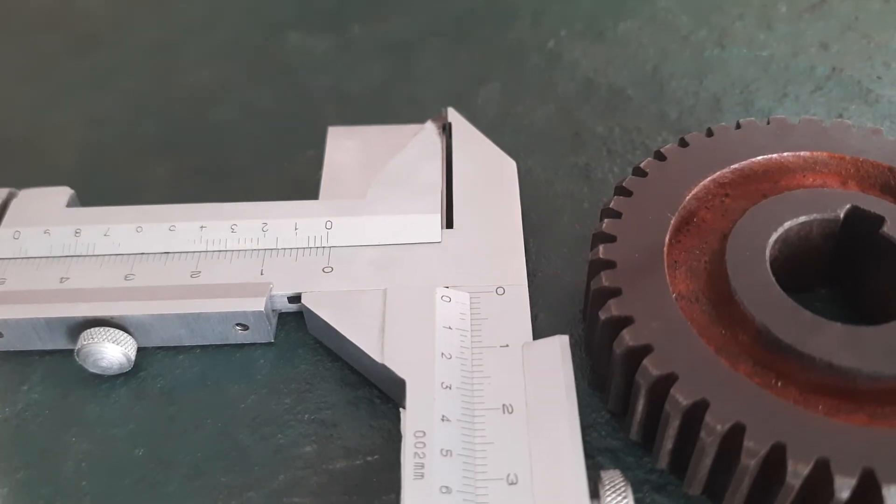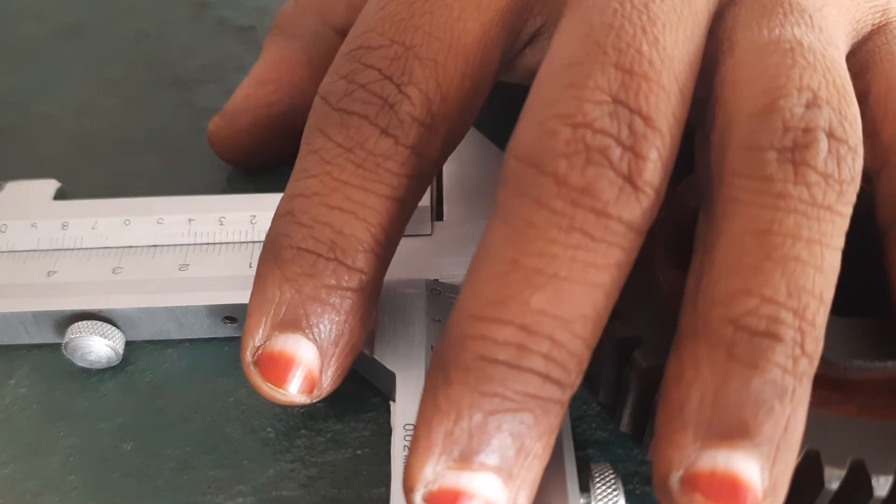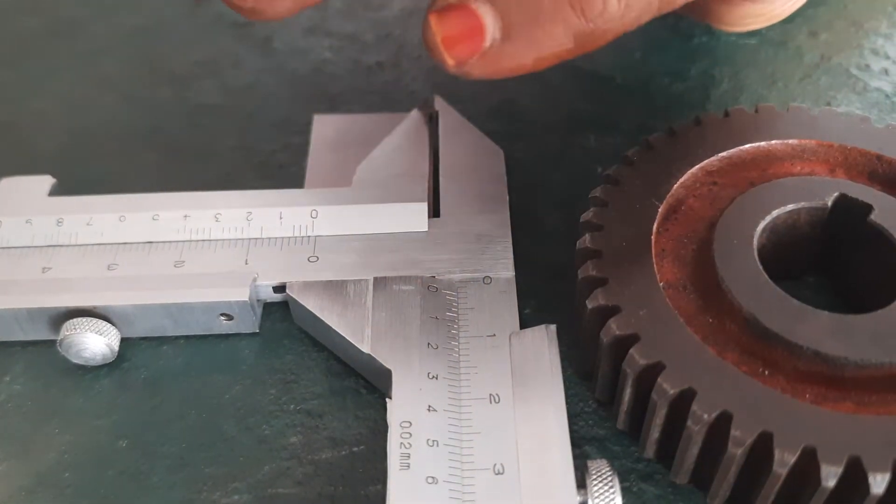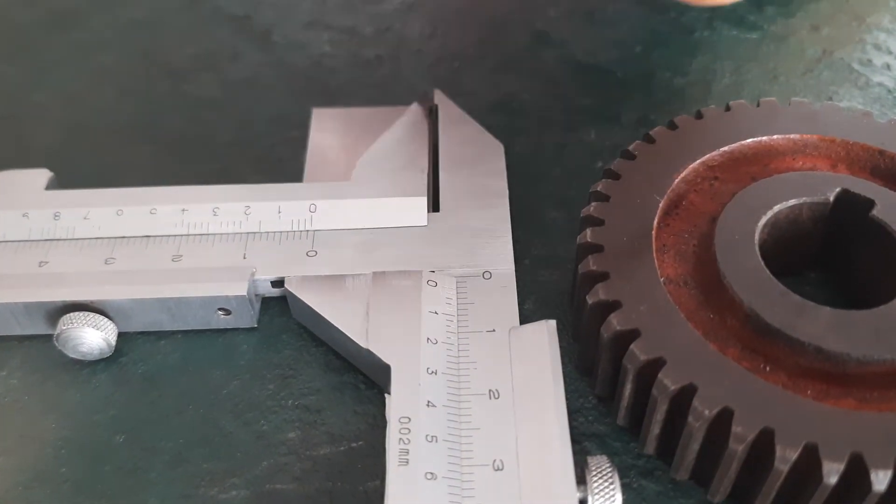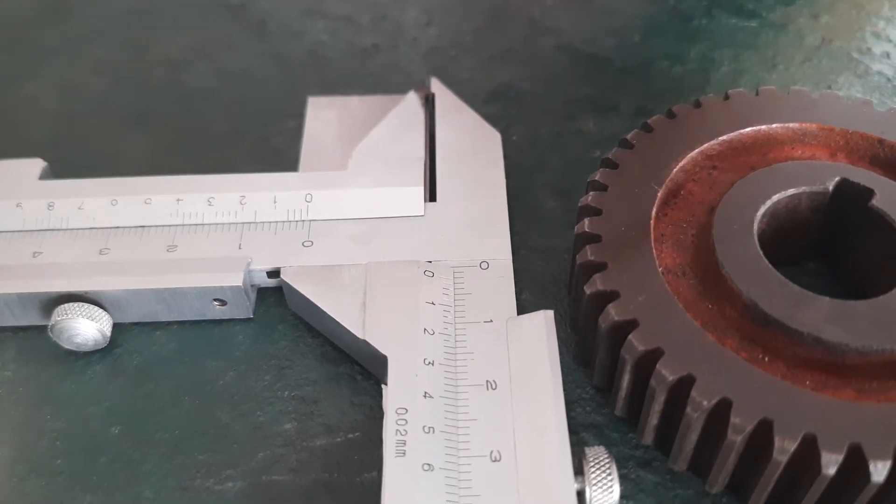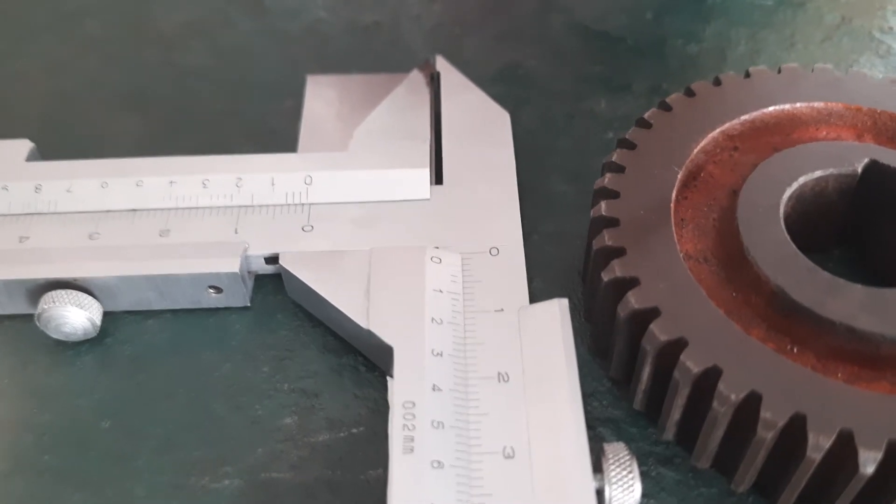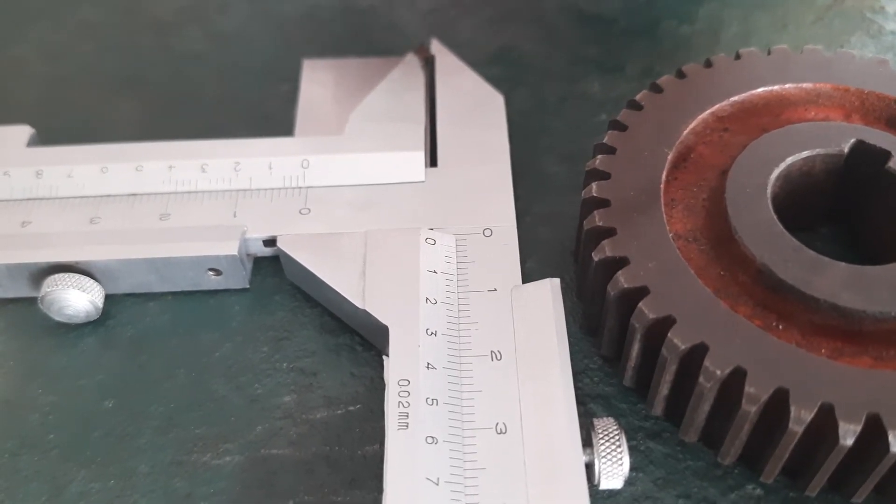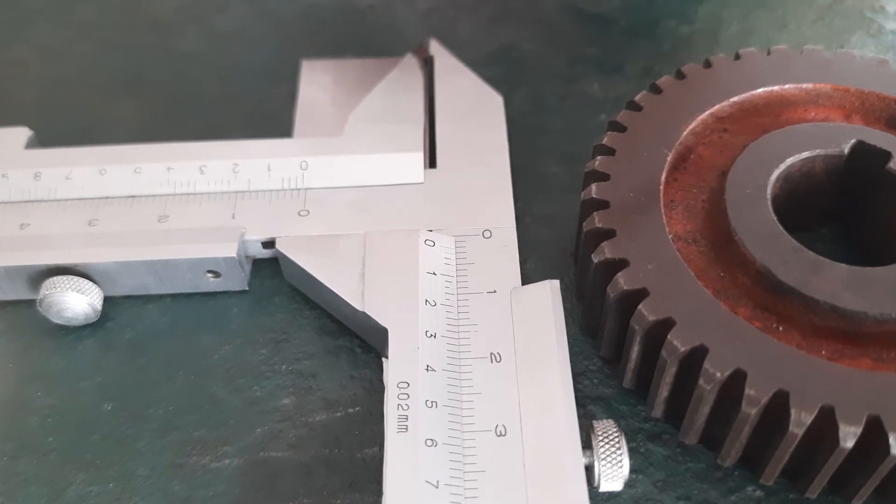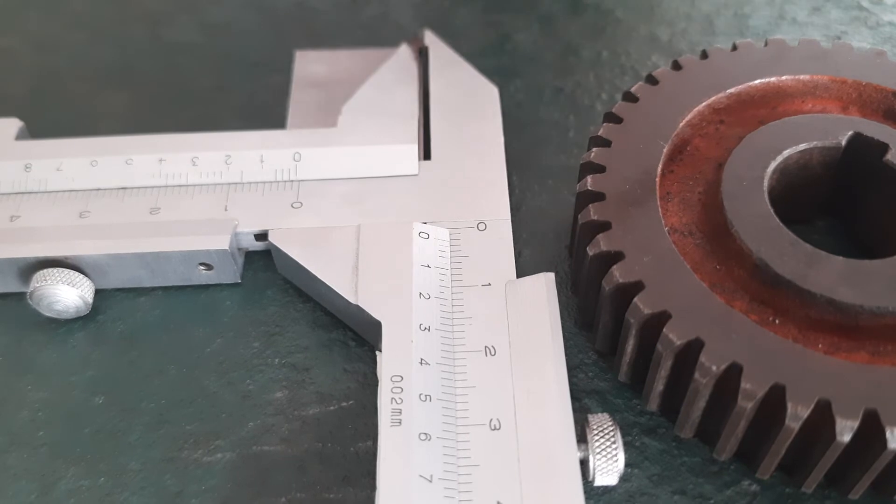The Starrett 456 gear tooth vernier caliper is designed to measure in 0.001 inches. Also, where larger gears are available, using the distance from top to bottom for the same purpose, it can also be used for measuring hobs and form thread tools in our industry.